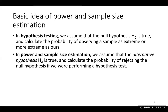In hypothesis testing, we first create a null hypothesis H0, calculating the probability of observing a sample as extreme or more extreme as ours — that the differences are as extreme as the ones we observe. In power and sample size estimation, you approach it from the other way around: you assume the alternative hypothesis is true and calculate the probability that you're rejecting something you shouldn't have rejected, testing 1 minus beta — the wrong acceptance of the null hypothesis.